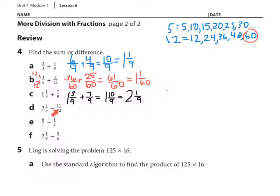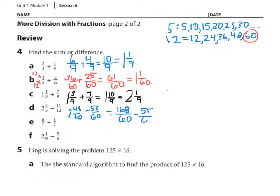Number 4d: I see fifths and twelfths again. I already know my least common multiple is 60, so I'll change those into sixtieths. Four-fifths — multiply by 12 — so four times 12 is 48, giving forty-eight sixtieths. Subtracting eleven-twelfths — multiply by 5 — so eleven times 5 is 55, giving fifty-five sixtieths. Can I subtract 55 from 48? No. I'm going to borrow a whole number and add it to the sixtieths, giving one-hundred-eight sixtieths minus fifty-five sixtieths equals fifty-three sixtieths. The mixed number answer is one and fifty-three sixtieths.